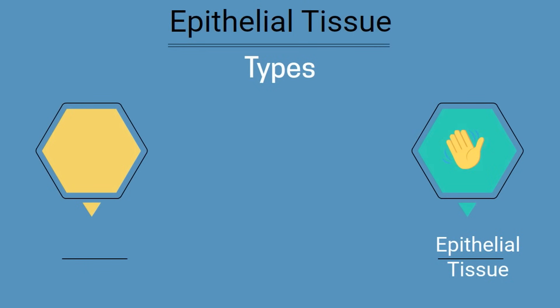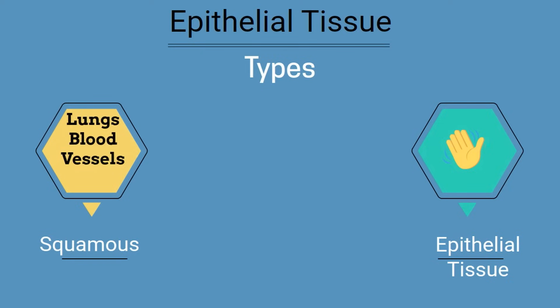First up you have squamous epithelial cells. Squamous cells are like pancakes — their width is greater than their height. You will find these in the lungs and blood vessels.